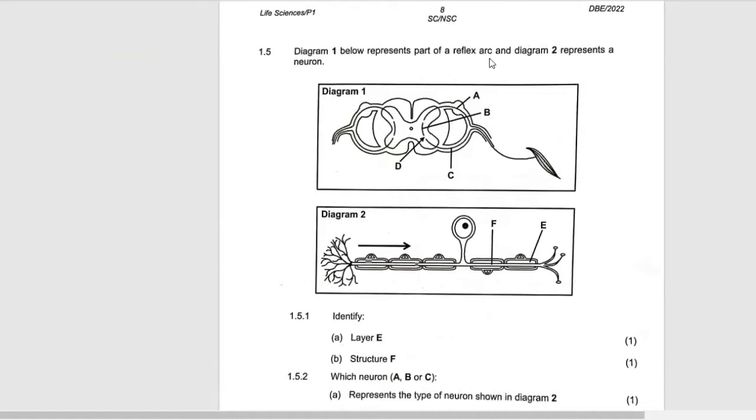The diagram represents part of a reflex arc and diagram 2 represents a neuron. You must know how to label all of this. This one comes from where, this one goes from where.